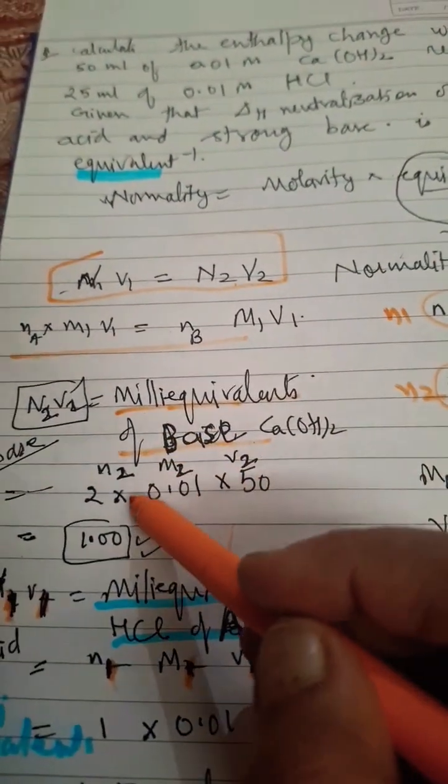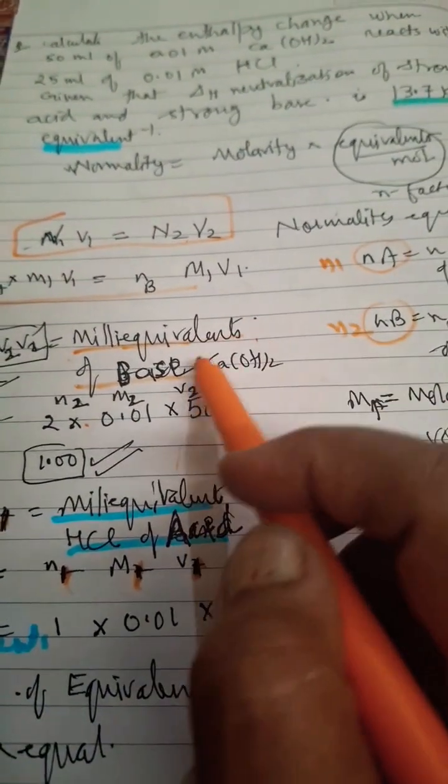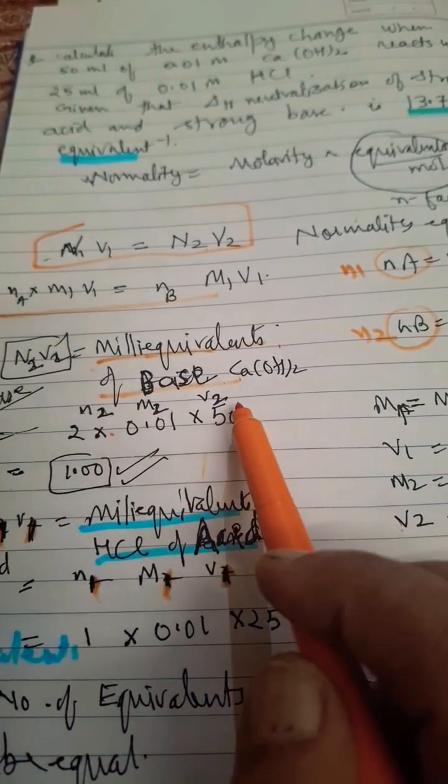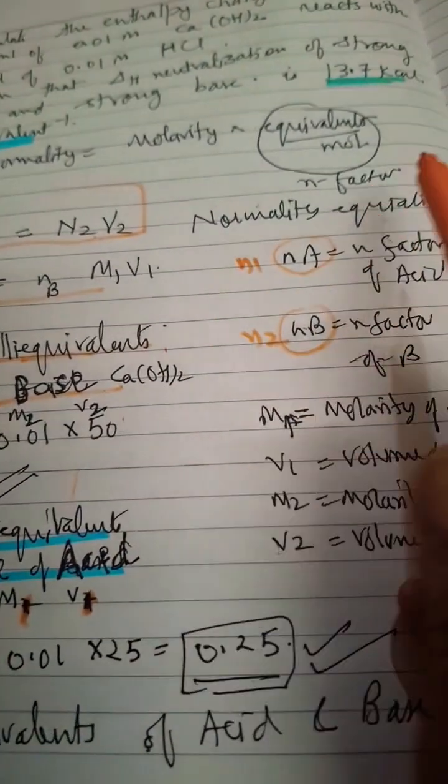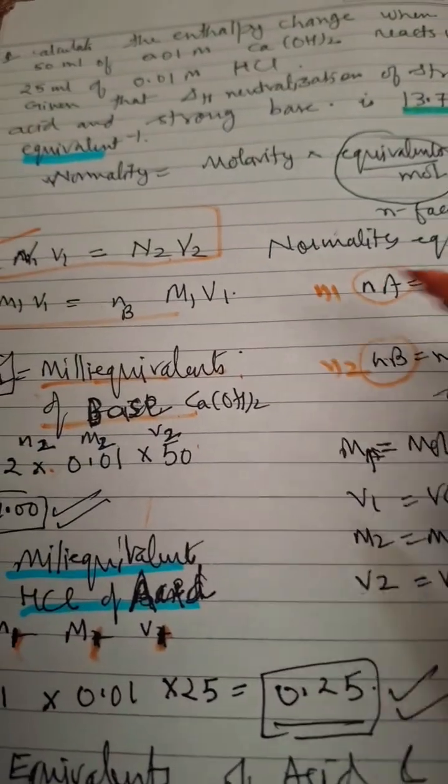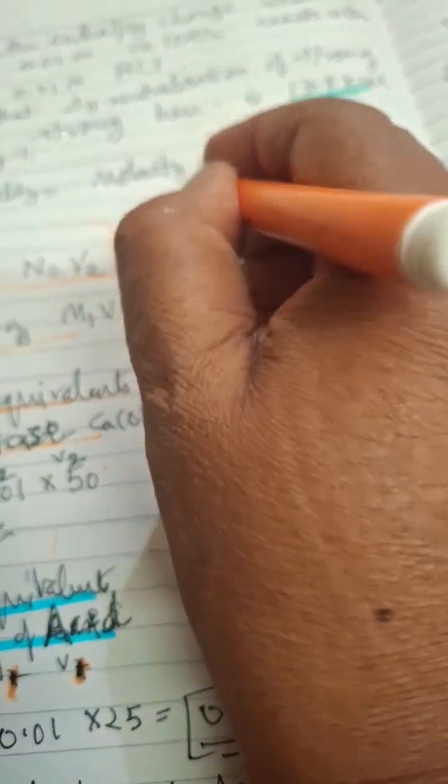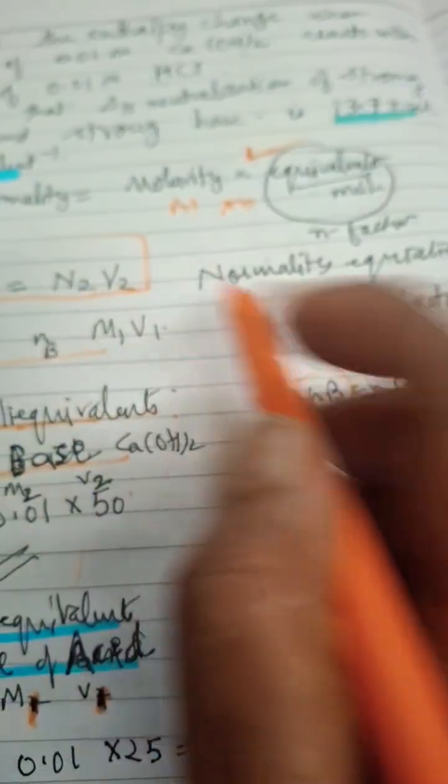So N2V2 is equal to milliequivalents of base. At that moment we will use N2 × M2 × V2. Why? Because normality is equal to molarity × n-factor. Here I am writing M for molarity.